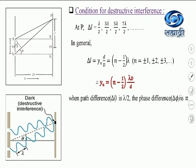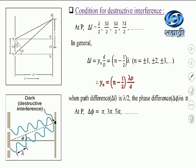Now let us obtain the condition for phase difference for destructive interference. When path difference between the two waves is λ/2 — the first case for destructive interference — the phase difference delta phi is π. When path difference is lambda, the phase changes by 2π; so when path difference is λ/2, the phase changes by π. So at point P, for destructive interference to take place, delta phi should be equal to π, 3π, 5π, and so on.